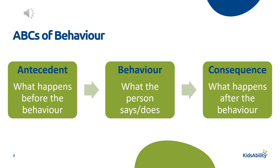Analyzing the ABCs of behavior involves being a good observer. It's helpful to record the antecedents and the consequences to understand the relationship between them. This will help us identify patterns of behavior and determine effective strategies for behavior change. For example, if every time I cry I get a candy bar, I'm more likely to cry again when I want some candy.